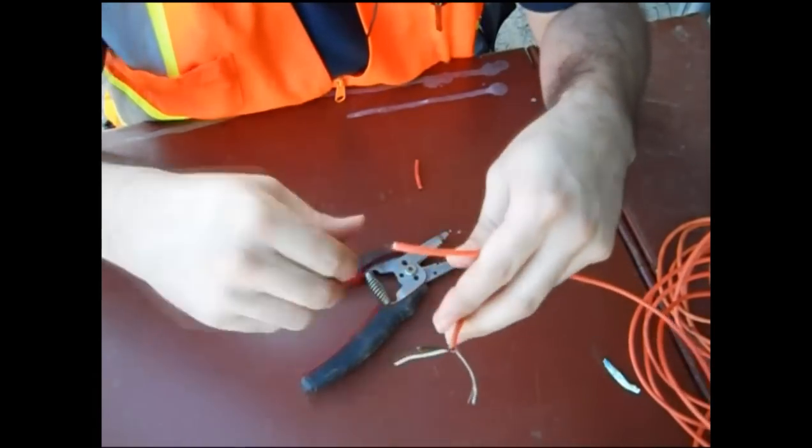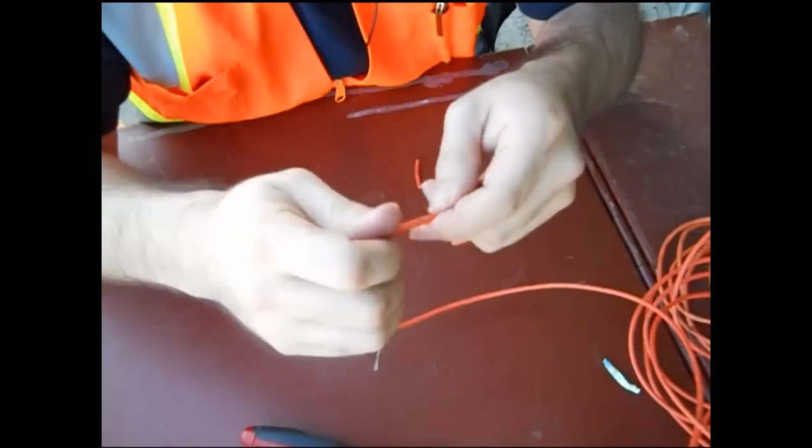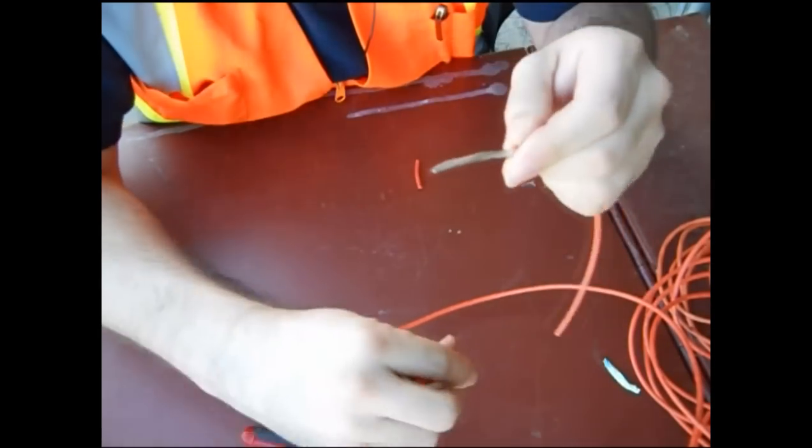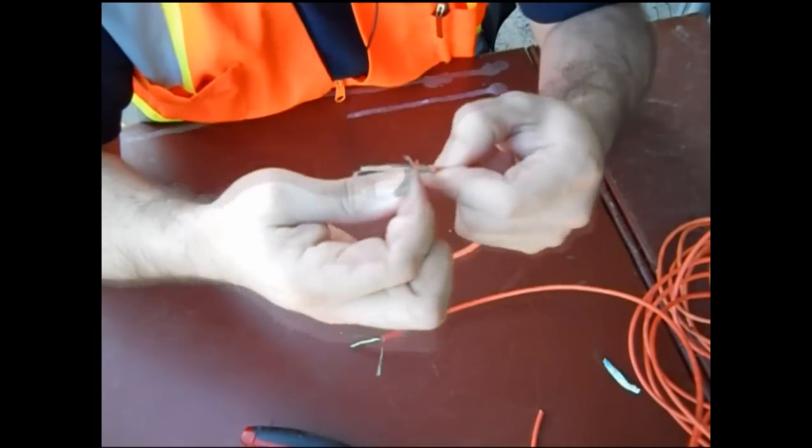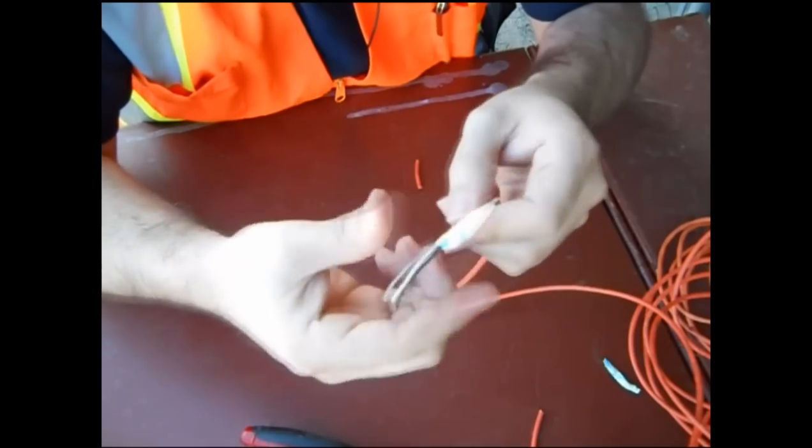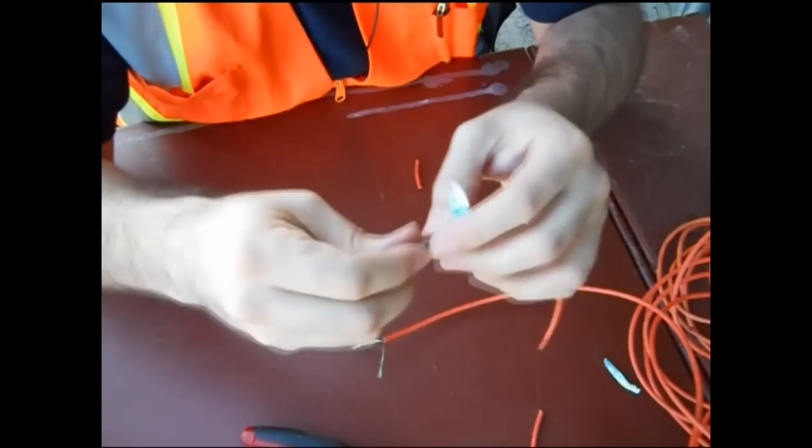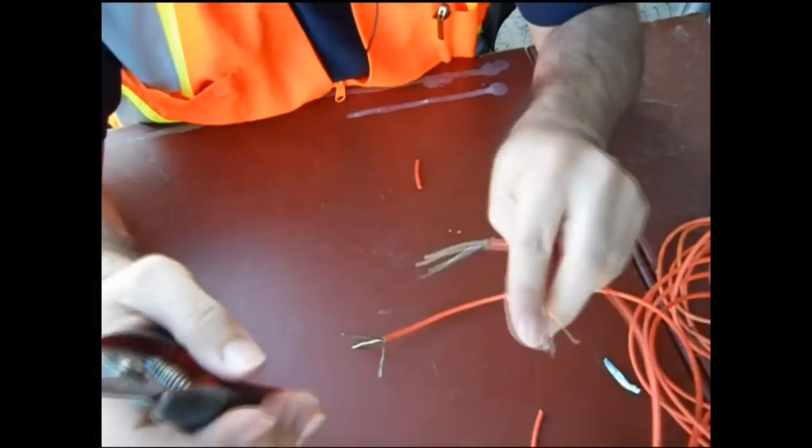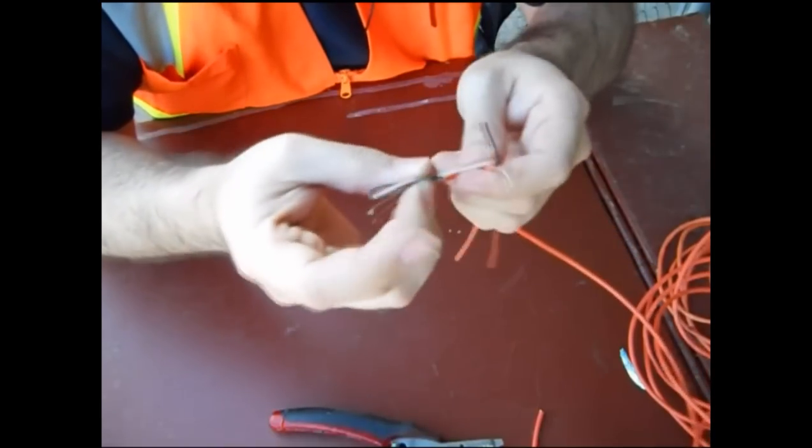I'm going to go ahead and do that with the next one as well. Just give it a little nick, bend it back and forth as it opens up, just give it a pull. Then we'll pull the jacket back just a little bit. I'll get the pull string and the foil in one swoop. Now I've got both ends of these here.